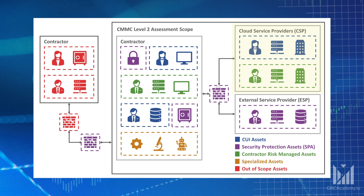Now let's look at the cloud service provider section. In this case, the defense contractor is leveraging a cloud service provider to process, store, and transmit FCI and CUI — for example, Microsoft 365 GCC High. Microsoft 365 would be in scope and CMMC Level 2 requirements would need to be applied to it. Because the cloud is used to process and store CUI, the DFARS 7012 FedRAMP moderate equivalent requirement would also be triggered. At the time of this recording, Microsoft 365 GCC High is in process to achieve a FedRAMP High authorization, which exceeds FedRAMP moderate. There is shared responsibility between the cloud provider and the end user — just buying GCC High isn't enough. You'll still have to secure the environment and address your portions of the shared responsibility.